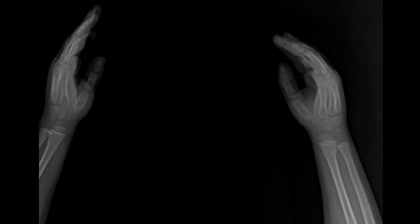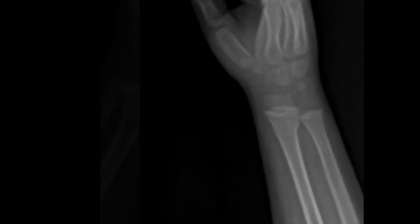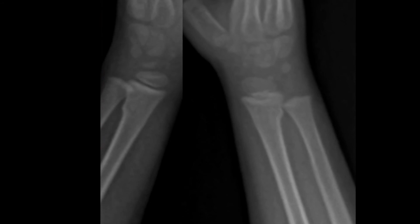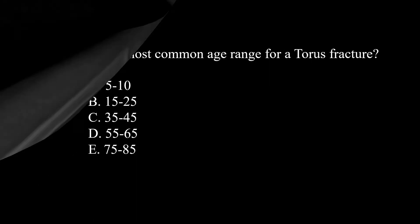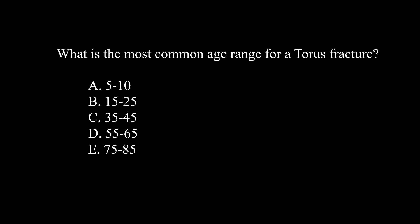This poor kid fell from a tree, and an inexperienced X-ray tech attempted a bilateral view. If we zoom in, you'll notice bilateral torus buckling fractures of the radial metaphysis.